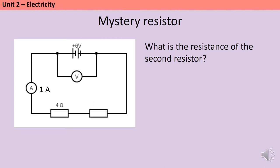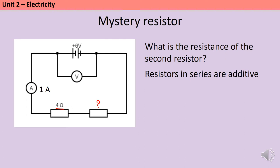Hopefully those calculations are feeling quite straightforward once you've memorised that first equation. But quite often these are going to be put in a context that requires you to use some of your other knowledge about GCSE physics. So in a question like this I'm asked to calculate what the resistance of the second resistor is. I can see that the first one has a resistance of 4 and I want to know what the resistance of this one is. To answer this I need to use V equals IR but I also need to know that in a series circuit resistors are additive.